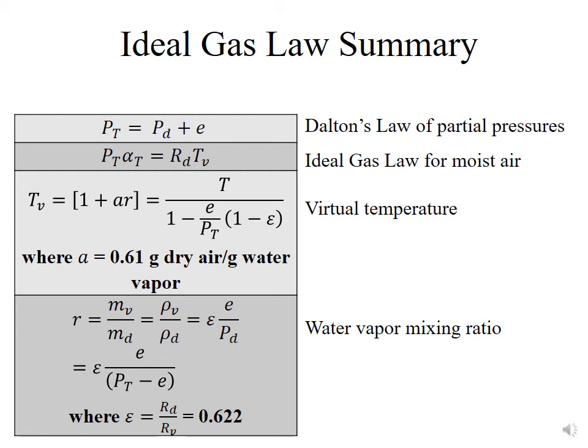And putting it all together, we have Dalton's law of partial pressures, which says that our total pressure is equal to the pressure of the dry, plus the pressure of the water vapor. And then we have the most useful form of the ideal gas law for moist air,